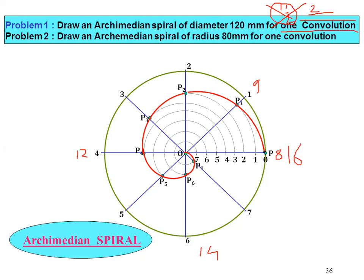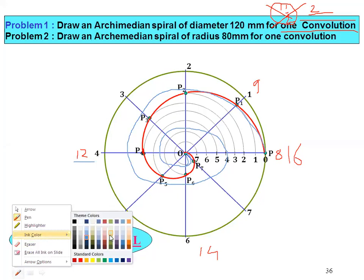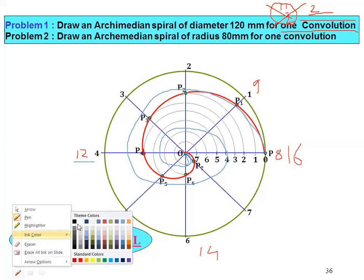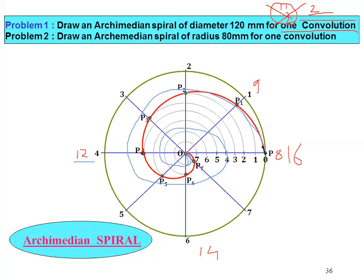I will show you in blue color. For the first convolution, it will be like this till the midpoint four, and after that it continues. This is the first convolution till eight, and this is the last convolution for two convolutions. If it is one and a half, you will divide it to twelve and divide the radius into twelve parts. For one convolution the curve goes around, and for the rest of the half convolution it continues like this.